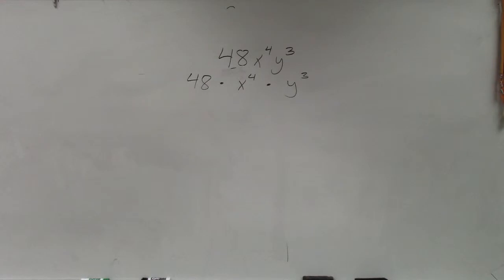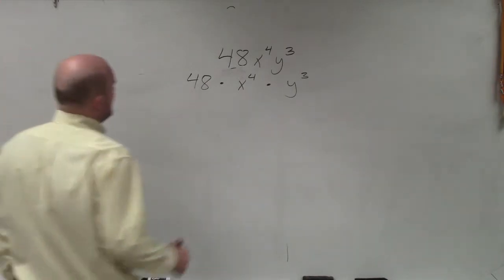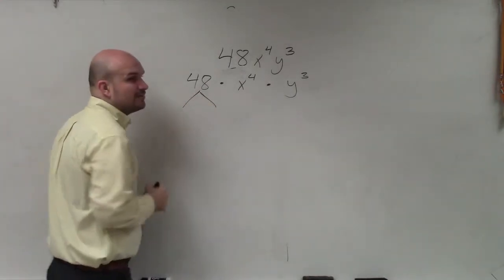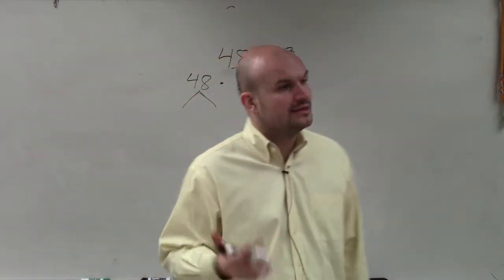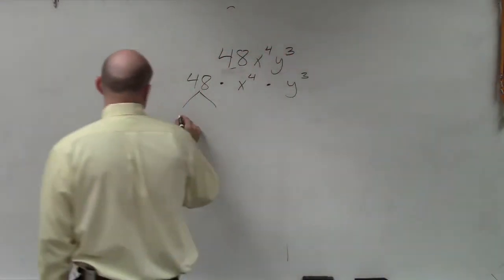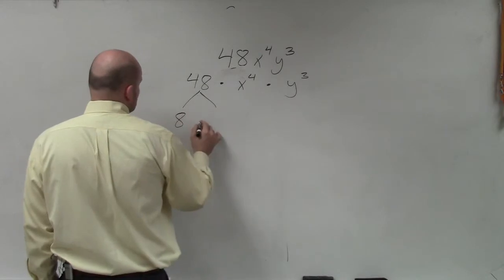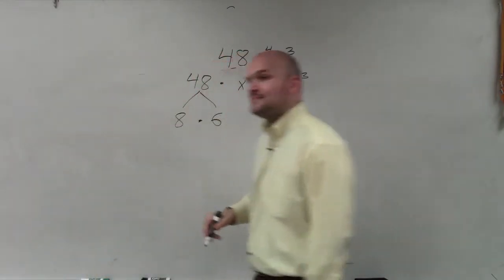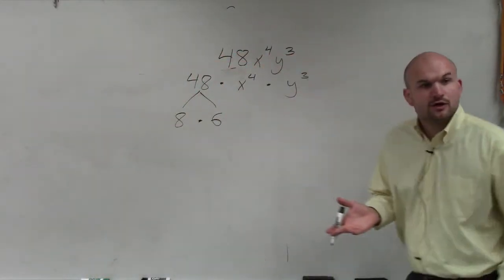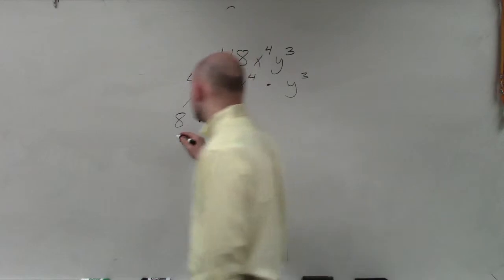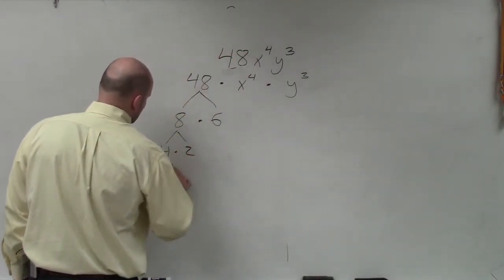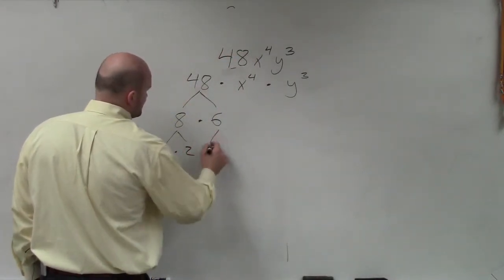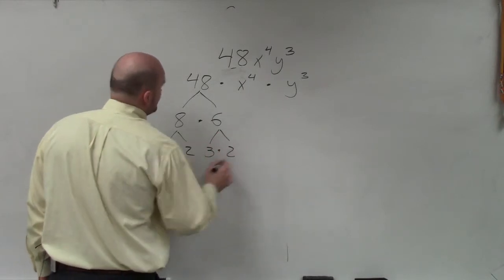So in this case, basically what we're going to do is see if we can break this down into two numbers that multiply to give you 48. Hopefully you guys see that 8 times 6 gives you 48. Then you keep going until you can't factor the numbers any further. Here I can do 4 times 2, 2 times 2; and 6 I can do as 3 times 2.